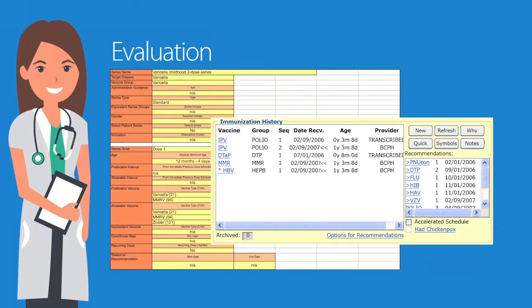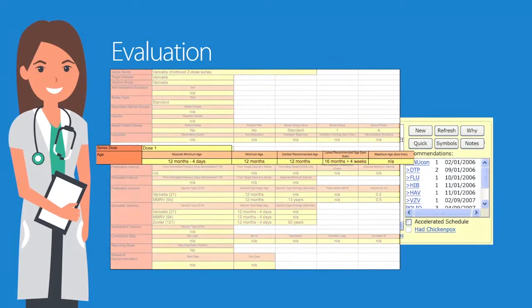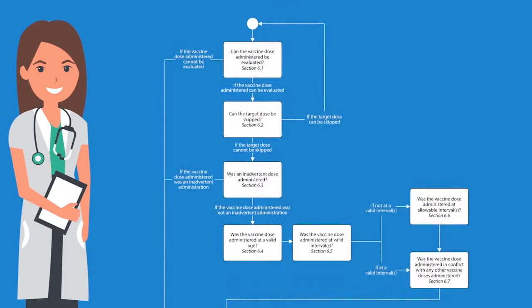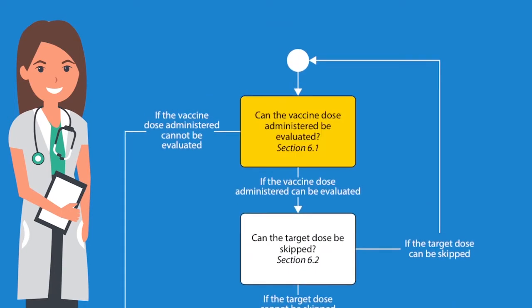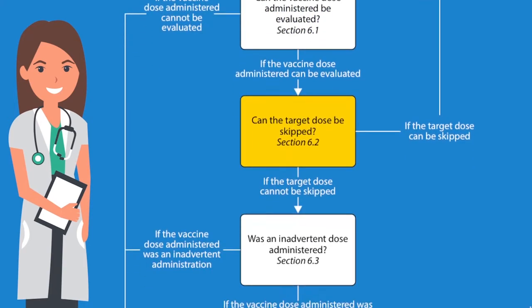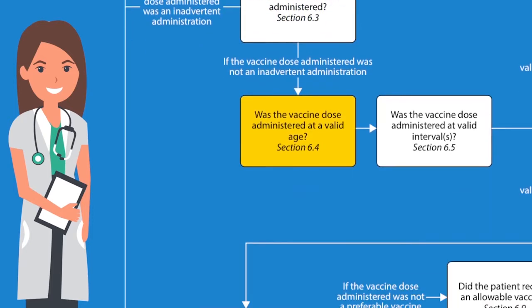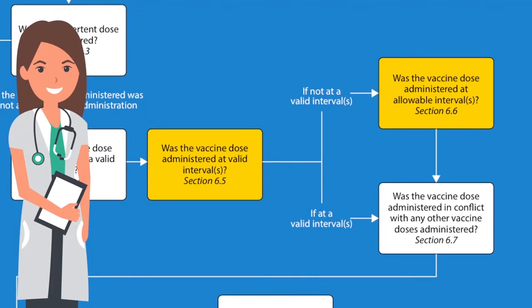The patient's immunization history includes the names and dates of the vaccines administered, and the supporting data contain the ACIP-recommended vaccine dose standards. The patient data is assessed to determine if a vaccine dose administered can be evaluated, a target dose can be skipped due to a patient's age or immunization history, a vaccine dose administered was an inadvertent administration due to the vaccine type that was administered, was given at an appropriate age, or was given at a preferred or allowable interval.